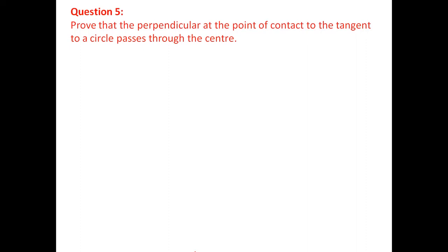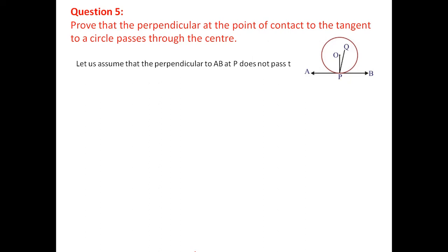Question 5: prove that the perpendicular at the point of contact to the tangent to a circle passes through the center. We use the method of contradiction. Assume that a perpendicular to AB at point P does not pass through center O, but instead passes through point Q. So PQ is the perpendicular, not OP.